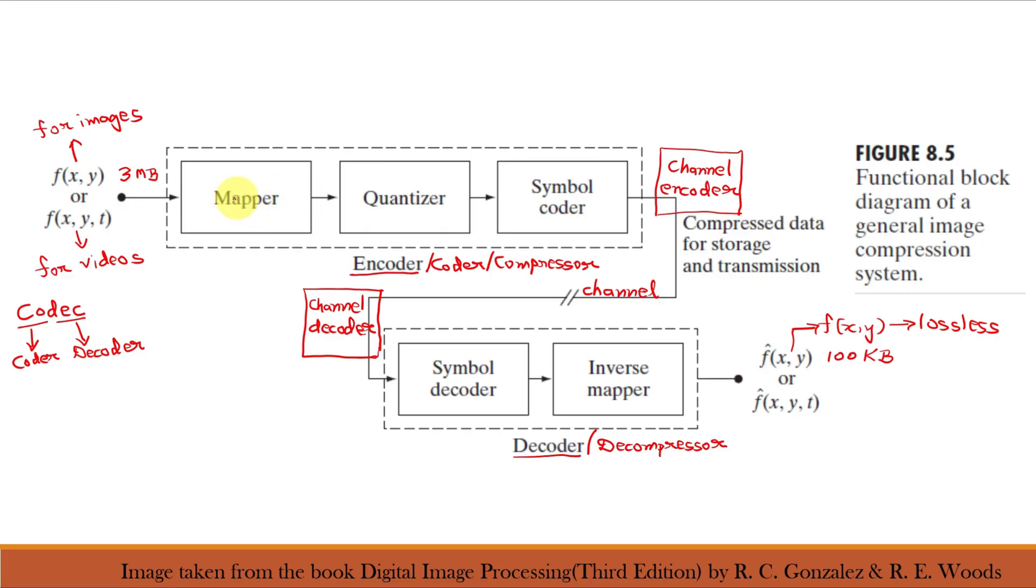In the first stage of encoding process, the mapper transforms the input data into a usually non-visual format designed to reduce interpixel redundancies in the image. This operation is generally reversible and may or may not reduce directly the amount of data required to represent the image. Run length coding is an example of mapping that directly results in data compression. Other examples are DFT and DCT which is used by JPEG where we transform the input image from spatial domain to more efficient frequency domain as we discussed in our previous video class.